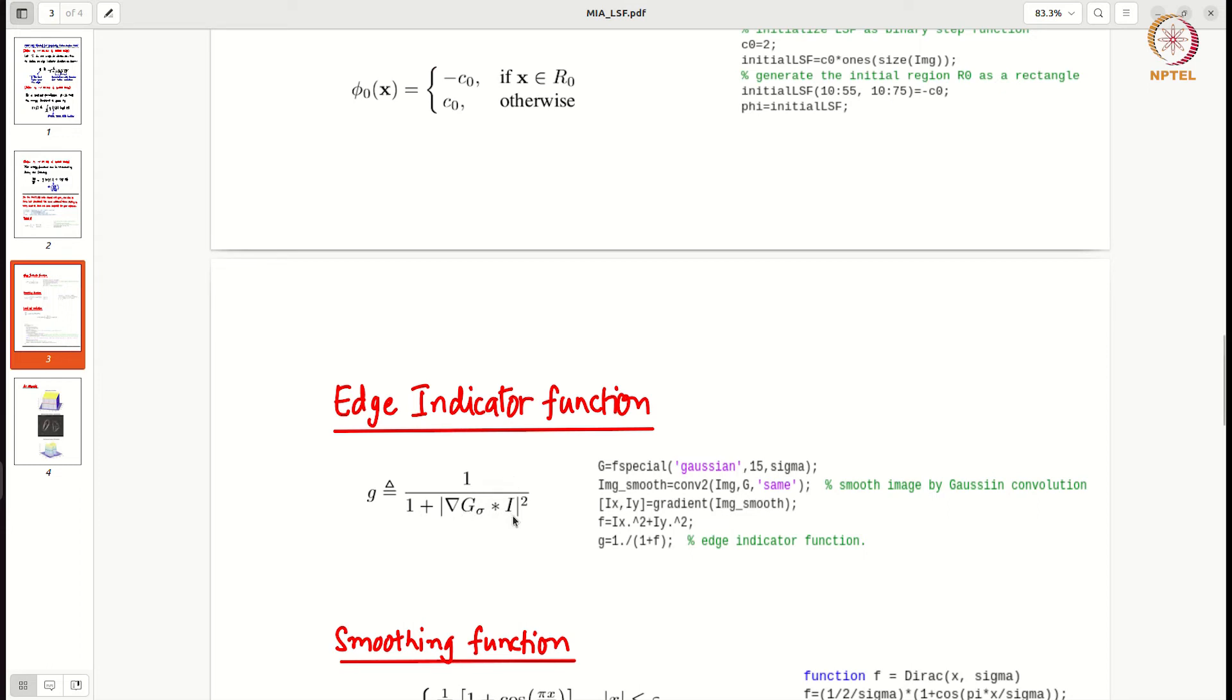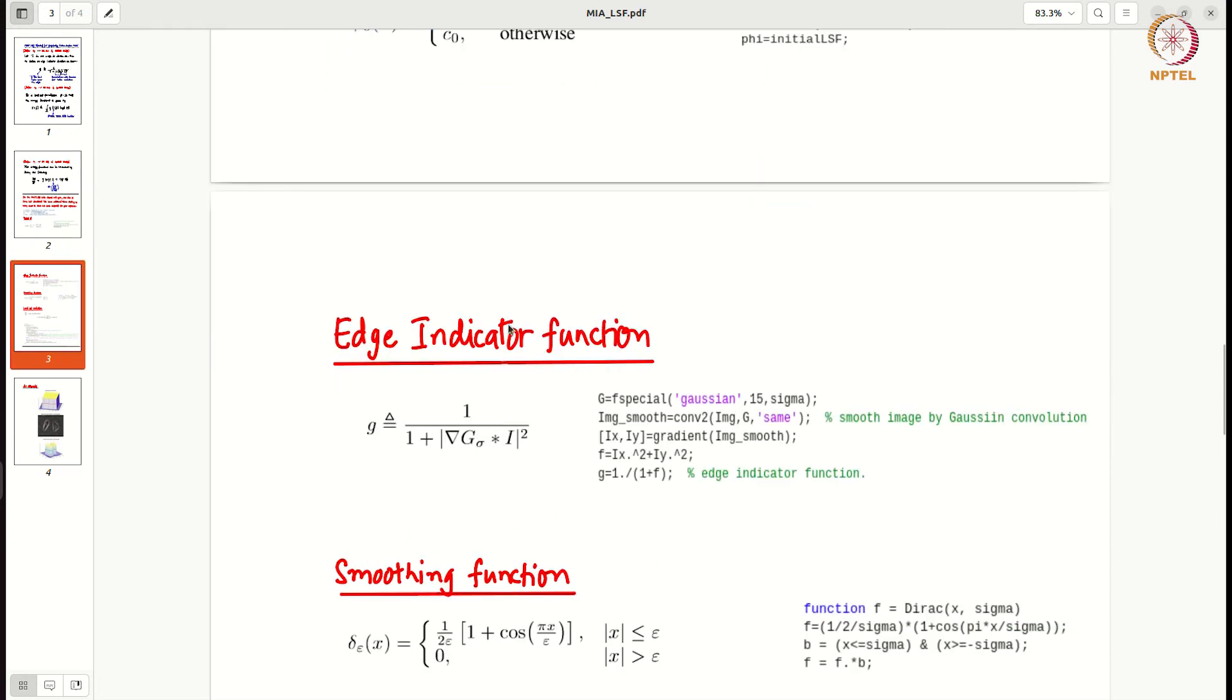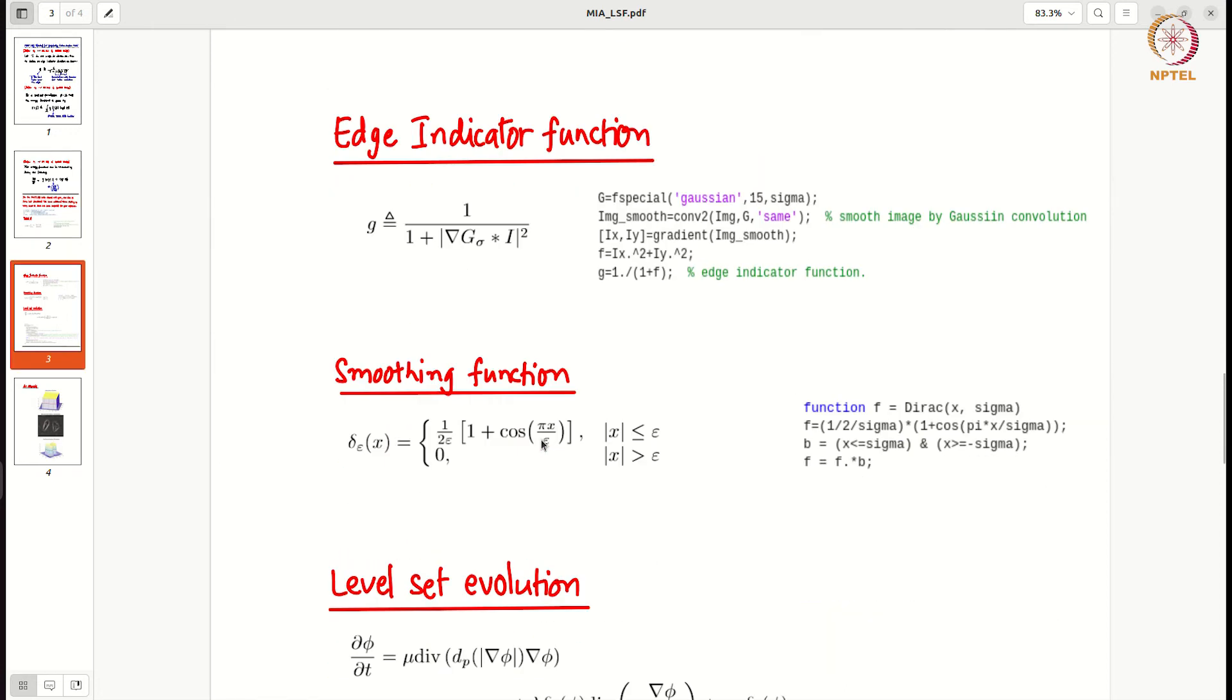Here you have initial phi, then you have edge indicator function. Then this is smoothing function also. Here they have used some other function. You can also try the one that sir taught in the class. It is up to you. So the idea is smoothing function is used there.